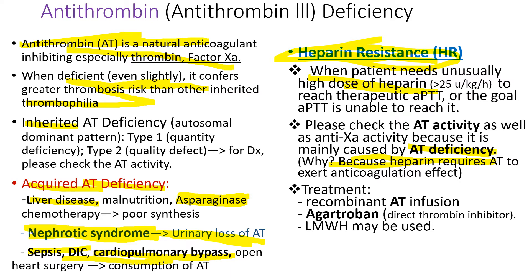For patients with heparin resistance, you stop heparin and give argatroban, which is a direct thrombin inhibitor. We also have recombinant antithrombin to replenish sufficient antithrombin levels in the body. High-dose low molecular weight heparin has also been used successfully to treat patients with heparin resistance.